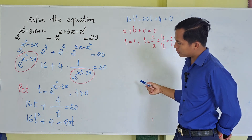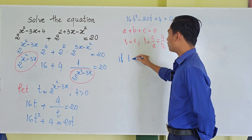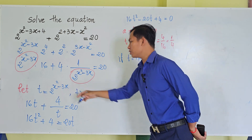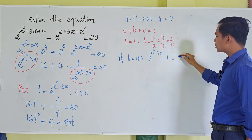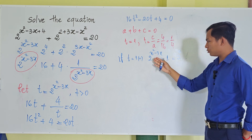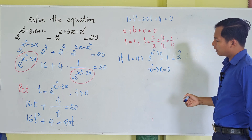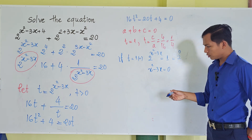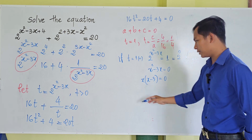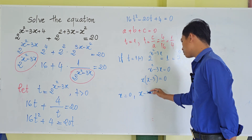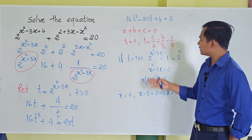For t = 1: we have 2^(x²-3x) = 1 = 2^0, so x² - 3x = 0. Factoring out x gives x(x - 3) = 0, which means x = 0 or x = 3.